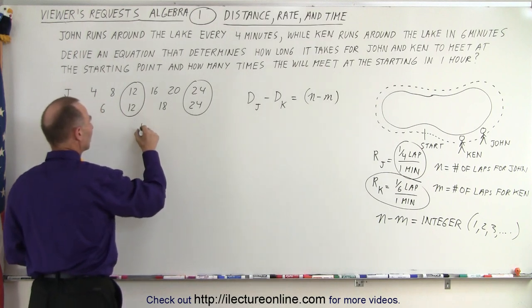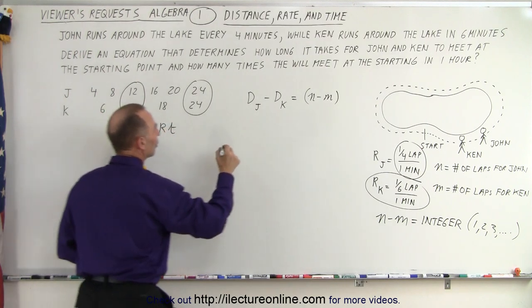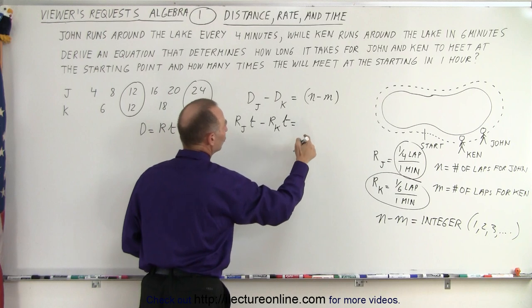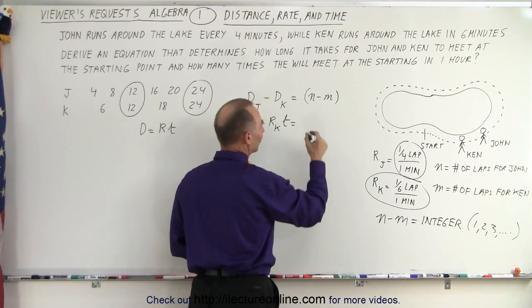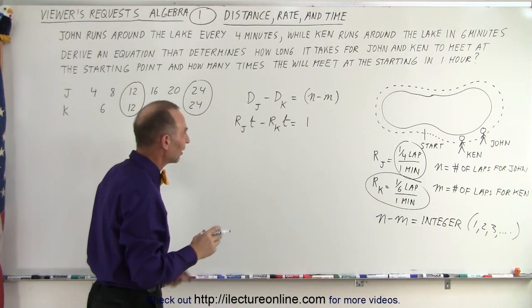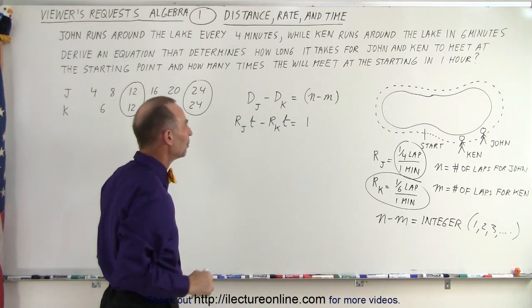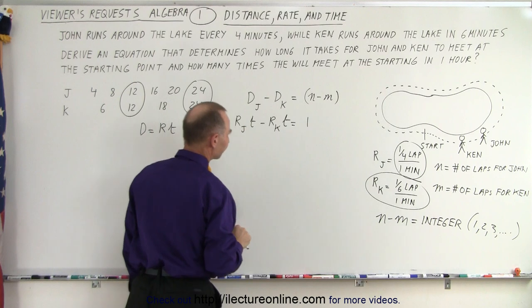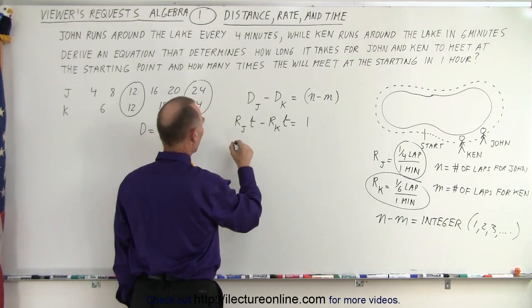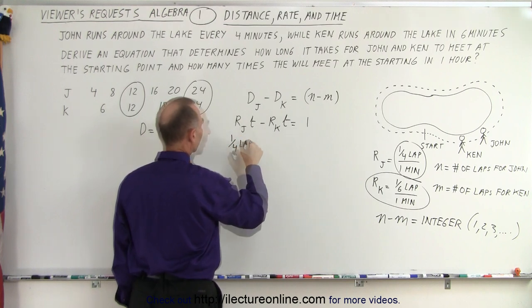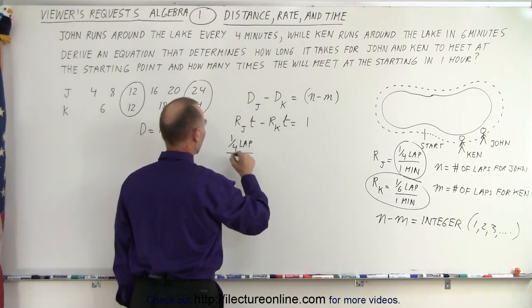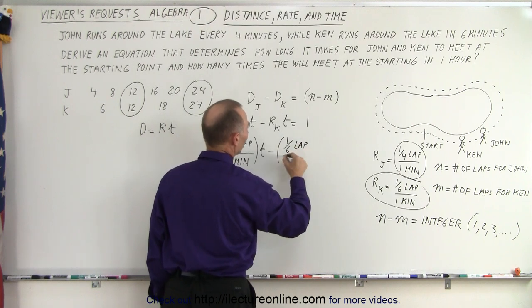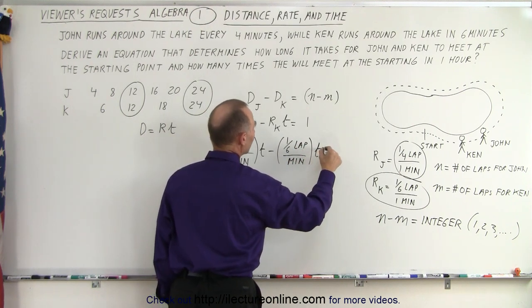We use the equation that distance equals rate times time, so the rate of John times the time minus the rate of Ken times the time equals the number of differences in laps. Let's do it for one lap. If we do it for one lap of difference, that's when John and Ken will meet at the same point again. So the rate of John, that would be one quarter of a lap per minute times T, minus the rate of Ken, which is one sixth of a lap per minute times T, and that is equal to one lap.